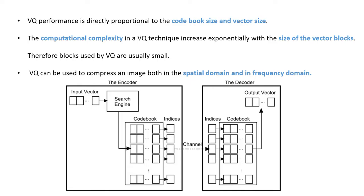VQ performance is directly proportional to the code book size and the vector size. The computational complexity in VQ increases exponentially with the size of the vector blocks; therefore, the blocks used by vector quantization are usually small. VQ can be used to compress an image both in the spatial as well as frequency domain.